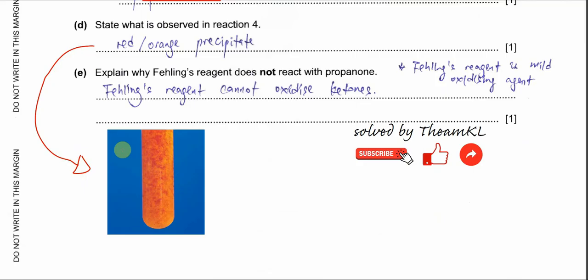Part E: explain why Fehling's reagent does not react with propanone. Fehling's reagent is used to react with aldehyde groups and is a mild oxidizing agent. Propanone, being a ketone, cannot be oxidized — that is why Fehling's reagent cannot react with or oxidize a ketone.